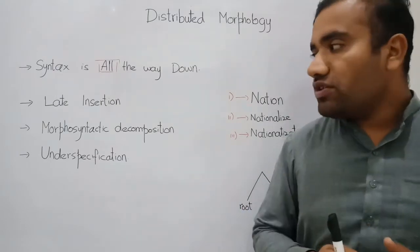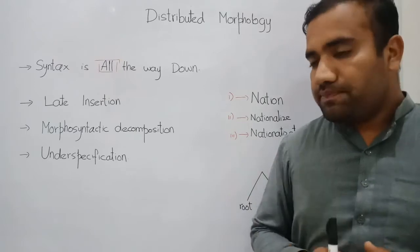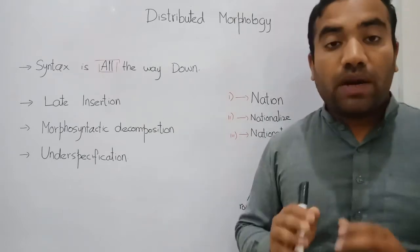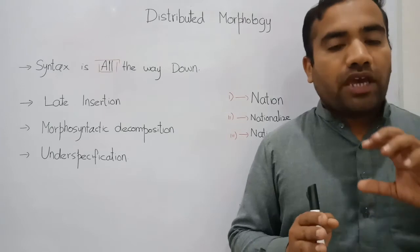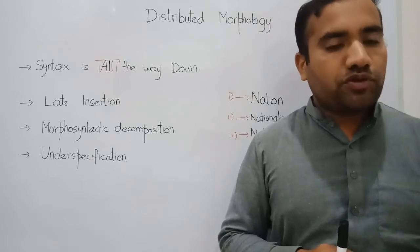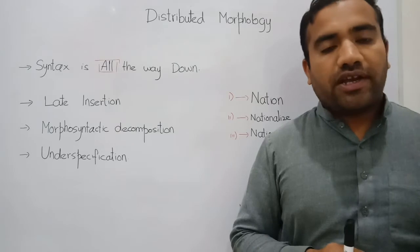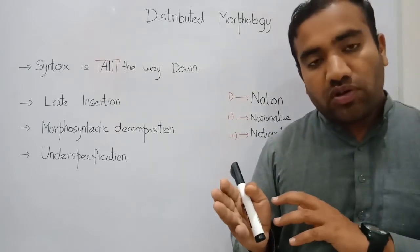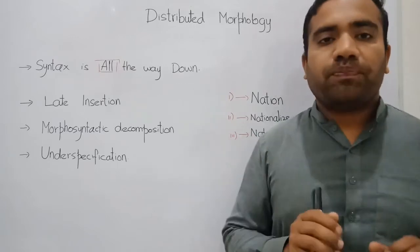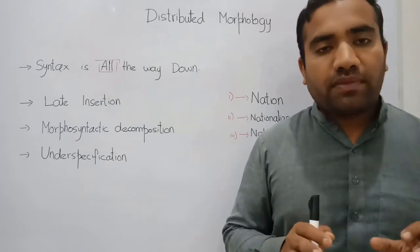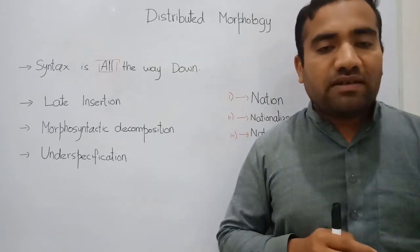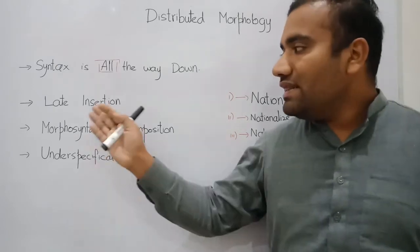When we want to generate a word, the first core is late insertion, also called layer initialization. In syntax, we have an abstract layer — an abstract frame. Once that abstract frame has been formed, we insert the lexical item; that is called late insertion. The same applies in distributed morphology: if we want to generate words, we first form an abstract frame and then insert the lexical item.